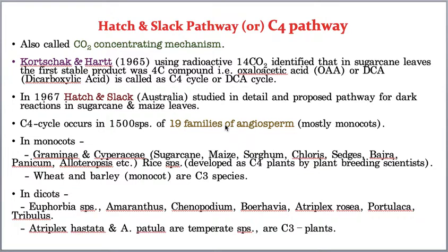The C4 pathway was first identified by two scientists: Kortschak and Hatch. They were working on sugarcane leaves, observing the process of photosynthesis using radioactive 14CO2. When examining the mechanism of photosynthesis in sugarcane leaves, they got a surprising observation.